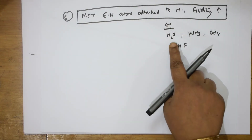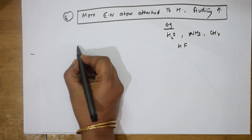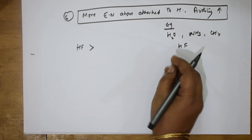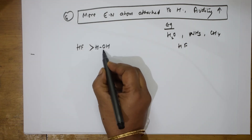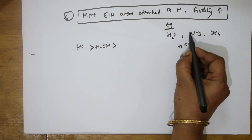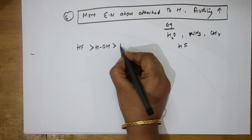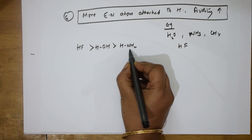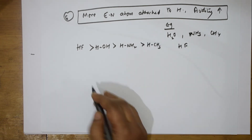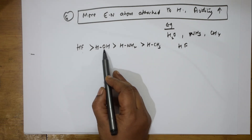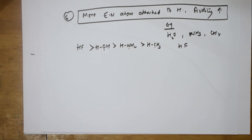Among these, HF has fluorine which is the most electronegative. So the order is: HF > H2O > NH3 > CH4. After fluorine comes oxygen, then nitrogen, then carbon. Electronegativity: F > O > N > C. So this is your acidity order for these combinations.